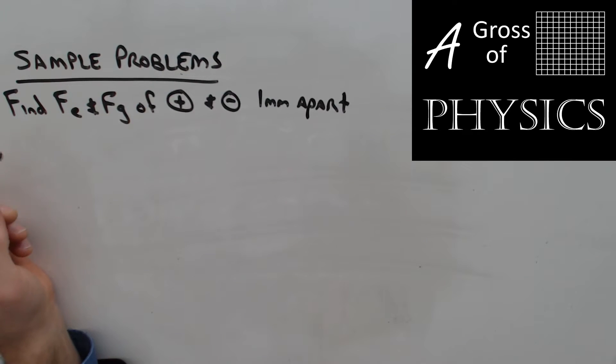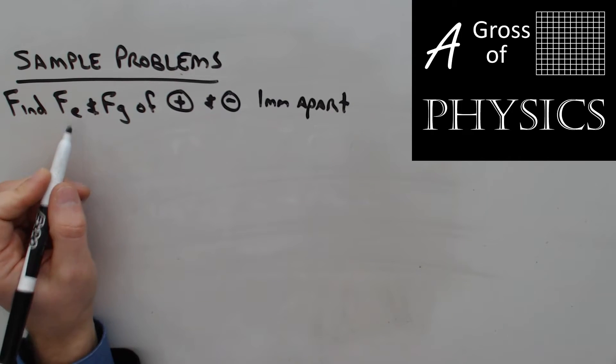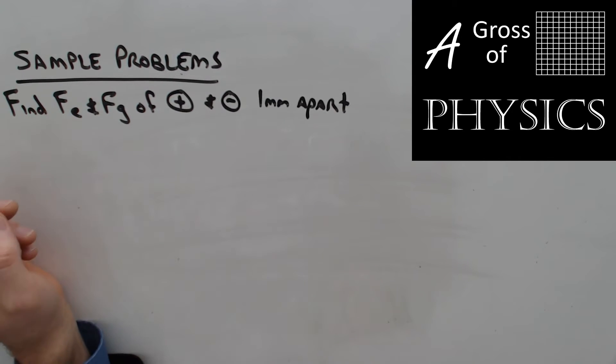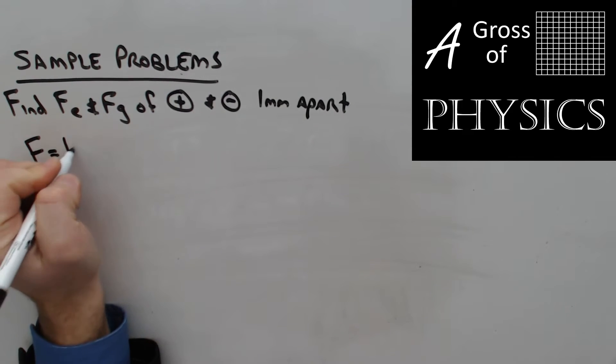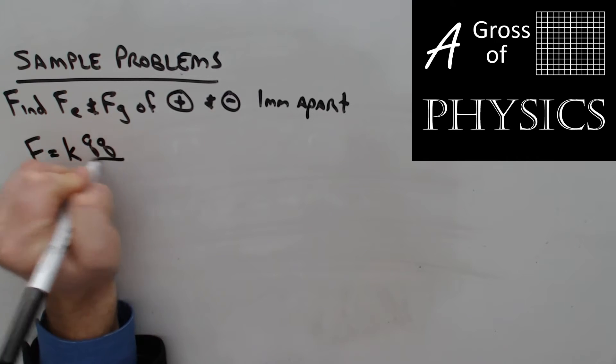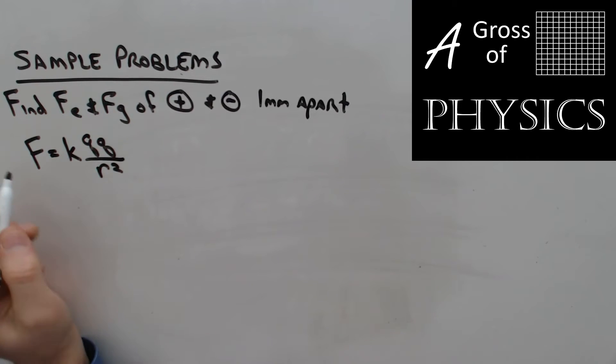Now let's do a sample problem dealing with the electrostatic force. First we're going to find the electrostatic force of a proton and electron a millimeter apart. If we start with our equation, F = KQQ over R squared, we realize that K is 9 times 10 to the 9 Newton meters squared over Coulomb squared.